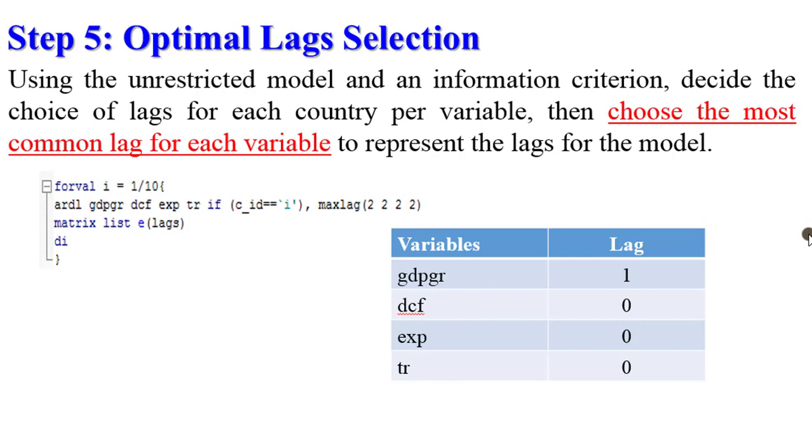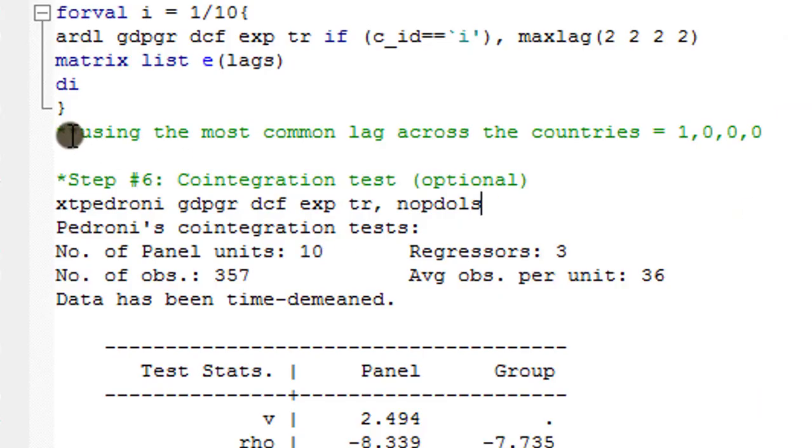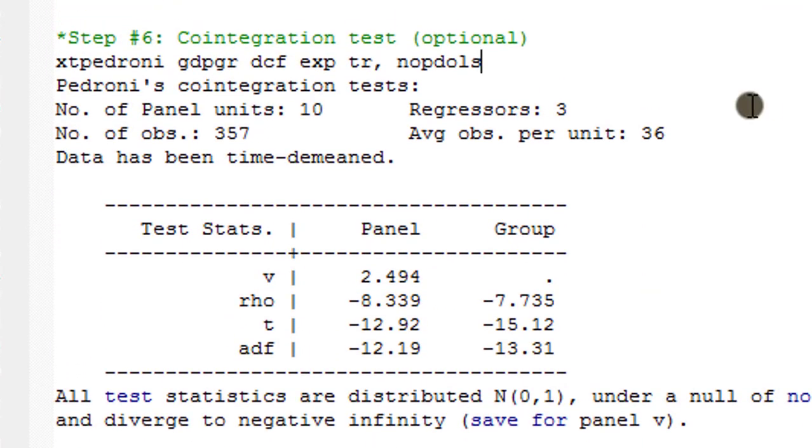Let's move now to step six. Step six is to perform co-integration test even though it is optional. If you have a strongly balanced data you can run the xtpedroni, which I have here. This is the code, I've highlighted it and I'm going to run.